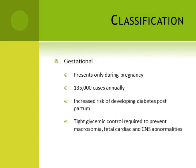The third important class is gestational diabetes, which presents only during pregnancy; after pregnancy the hyperglycemia returns to normal. About 135,000 cases occur annually. These patients are genetically prone to develop type 2 diabetes, and during pregnancy, hormones associated with insulin resistance cause the disease to manifest. Once pregnancy is over, euglycemia returns. Tight glycemic control is required to prevent complications such as macrosomia, fetal cardiac abnormalities, and CNS abnormalities.